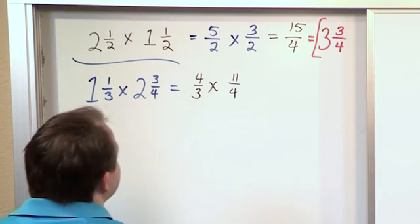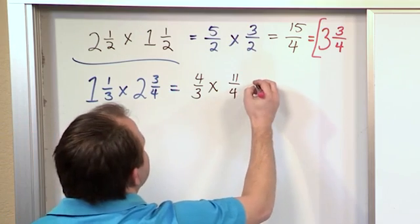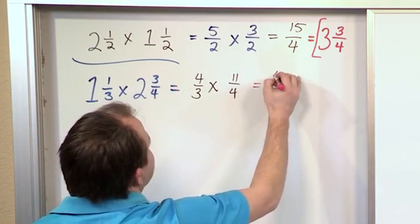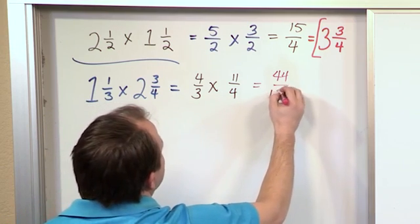And so whenever we get them into fractional form like this, we just simply multiply the top together. 4×11 is 44, and we multiply the bottoms together. 3×4 is 12.